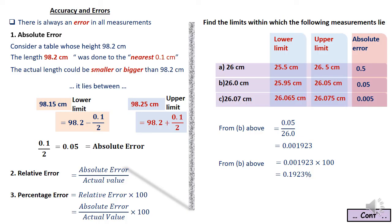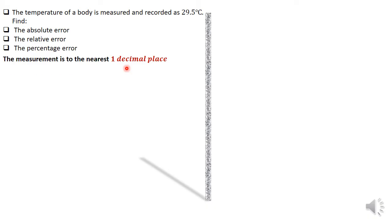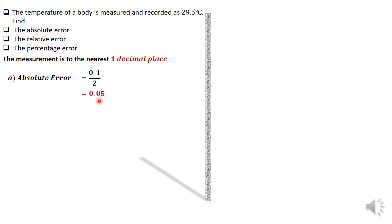Let's move on to two examples. The temperature of a body is measured and recorded as 29.5 degrees Celsius. Find the absolute, relative, and percentage error. The measurement 29.5 is given to the nearest one decimal place. That means the absolute error will be 0.1 divided by 2, which gives us 0.05. This is the error that could have been introduced, since the actual temperature could be higher or lower than 29.5 by 0.05.